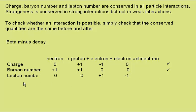Finally, lepton number. The neutron has zero lepton number, as it is not a lepton, as does the proton. The electron is a lepton with lepton number plus one, and the electron antineutrino is an antilepton with a lepton number of minus one. So we have zero on the left, a net of zero on the right, and in terms of lepton number conservation this interaction is possible. And so, as we know, beta minus decay is possible, as it does happen.